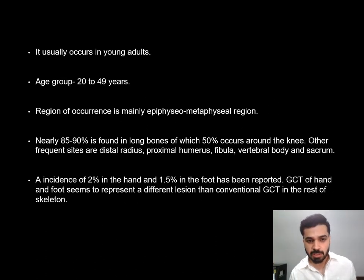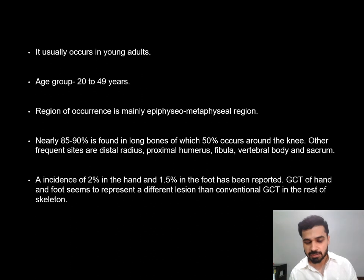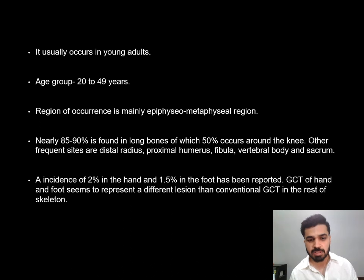GCT usually occurs in young adults, with the age group mainly 20 to 49 years. The region of occurrence is mainly the epiphysio-metaphyseal region. Nearly 85 to 90% is found in long bones, of which 50% occurs around the knee — the distal femur or proximal tibia. Other frequent sites are the distal radius, proximal humerus, fibula, vertebral body, and sacrum, where it occurs usually at the ala. An incidence of 2% is seen in the hand and 1.5% in the foot, and GCT of the hand and foot seems to represent a different lesion than conventional GCT in the rest of the skeleton.